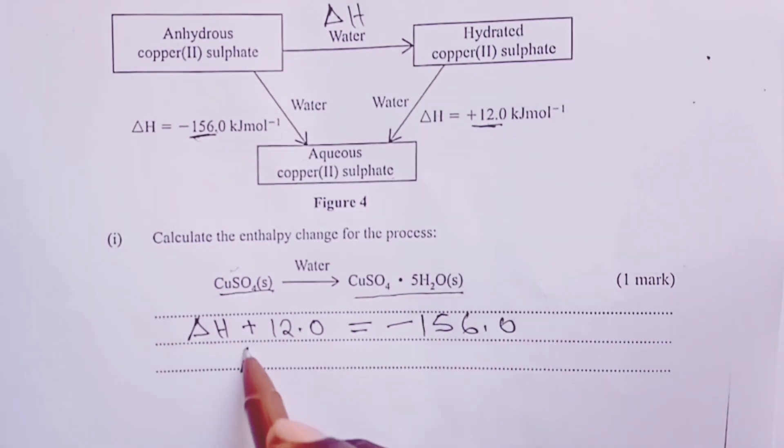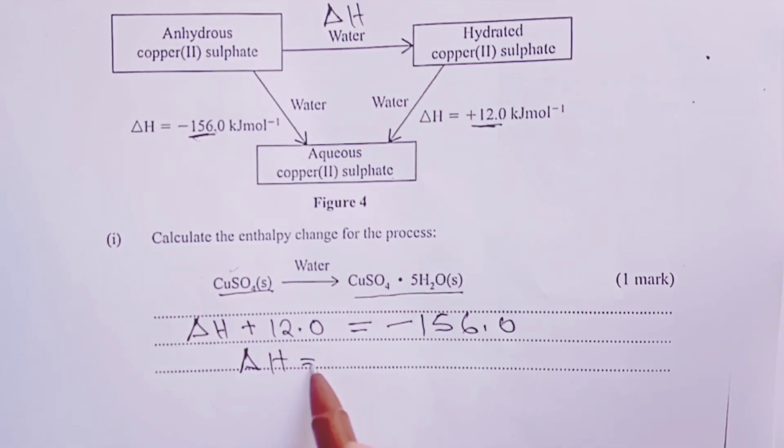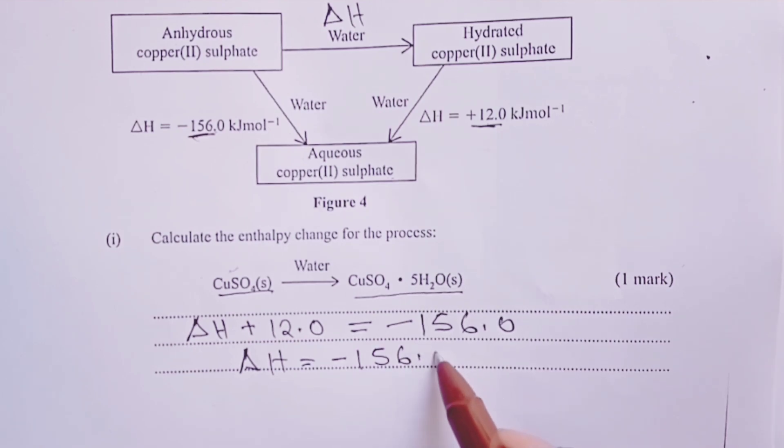From here, we realize that ΔH is given by -156.0 kilojoules subtracted from 12.0 kilojoules.